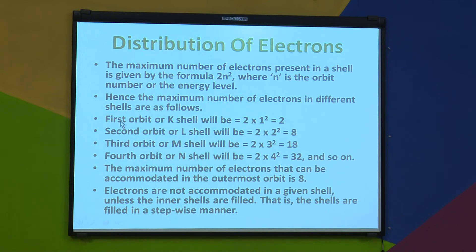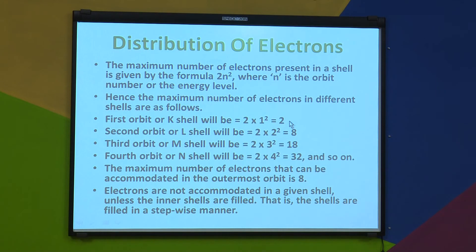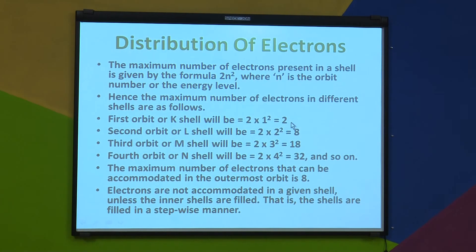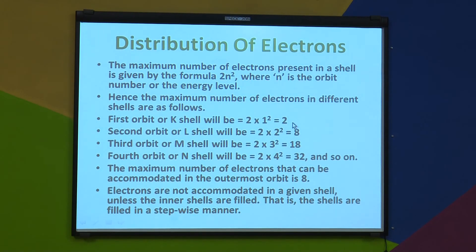Using the formula 2N², we can find the maximum number of electrons in each shell. For the first orbit, N=1 (K shell): it is 2×1²=2×1=2, meaning the first orbit can hold a maximum of 2 electrons. The capacity of the K shell is to hold a maximum of 2 electrons. When it holds these 2 electrons, it completes its duplet.